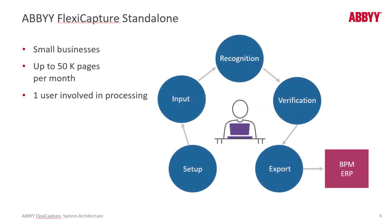FlexiCapture standalone installs on a single machine and is designed for lower volume installation use cases — up to 50,000 pages per month suggested. The bottleneck is verification; only one person can verify. Multiple people could scan to hot folders, so we could have a lot of scanning going on but only one verification operator working at a time. If you don't have a lot of verification going on, you could certainly exceed 50,000 pages per month.